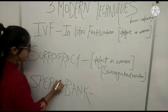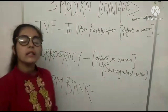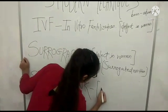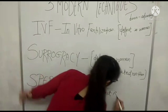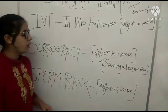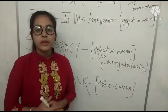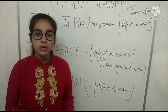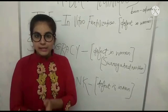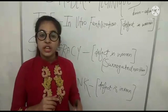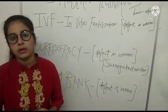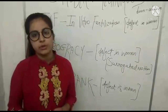Our last technique is the Sperm Bank. In the first two techniques we saw a defect in the woman, but in this last one the defect is in the man — there are fewer sperm counts or there is a problem with the sperms. Sperm bank is similar to blood donation: sperms of a healthy, desired man are collected and kept in the sperm bank after all checkups are done. The required couple then takes the sperms from the sperm bank, and the sperm donor's name is not revealed as per the law.